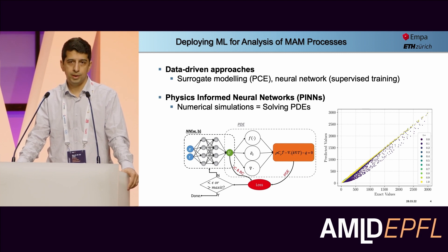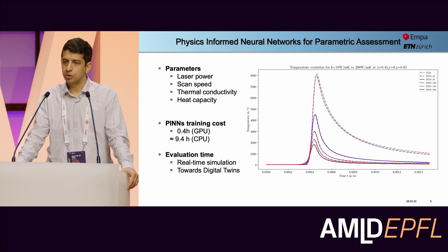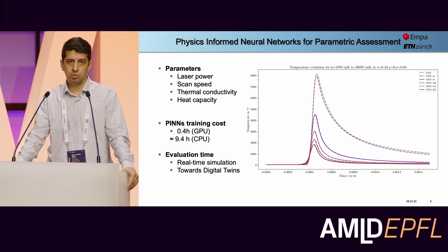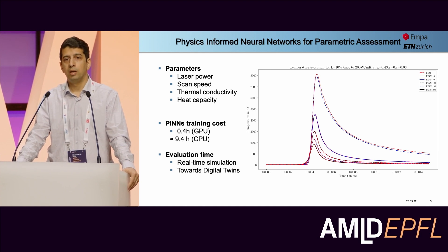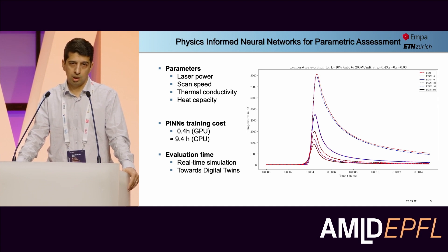In terms of accuracy, in particular for predicting the steady-state behavior of our system, we were quite successful. The strength of the PINN approach is that we can solve our PDE for parametric conditions. Now we have a trained neural network which takes our process parameters or material parameters as input and can predict temperature profiles without any additional computational cost. It took 20 minutes for training — after a master's student spent six months defining the problem and solving all the challenges — but after training we have a solution that gives us real-time prediction.